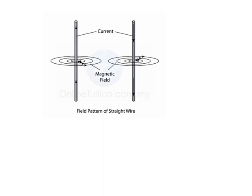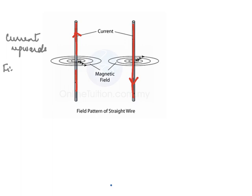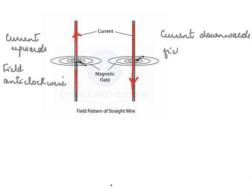In one picture the current is flowing upward and the field lines are in the anticlockwise direction. In the next figure, the current is flowing downward and the field lines are in the clockwise direction. So when current is upward the field is anticlockwise, and when the current is downward the field is clockwise. The direction of the magnetic field is decided by the direction of the current.